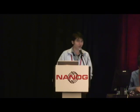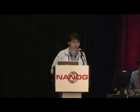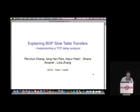Hello everyone, thanks for having me. I'm a PhD student from UCLA. Today I'd like to talk briefly about our recent work on explaining slow BGP table transfer. The work itself is more about data crunching and analysis, but for today's talk I will focus more on the tool part, which is a TCP delay analyzer. No single study including ours can really explain all the BGP problems in the wild, so we're happy to share our tools. If you feel interested after today's talk, maybe you can use the tool to analyze your own BGP traffic and find something interesting.